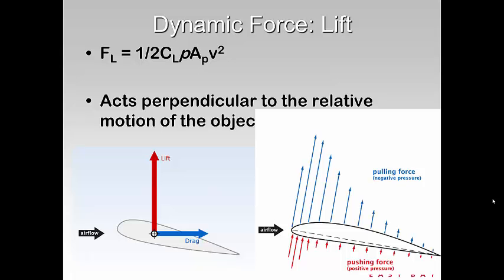The second type of dynamic force is lift. We talked about drag, which is in the horizontal direction, opposing the forward motion or the backward motion. And then there's lift. We think about lift as pulling something up, but lift can also be directed down. It's just perpendicular to the relative object of the motion.